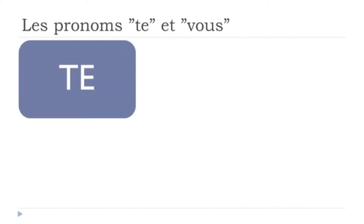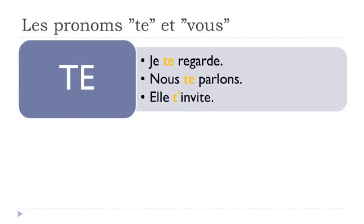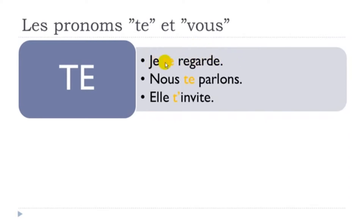Sur les pronoms te et vous. Let's see a few examples with te. The rule in French is that when you use pronouns, you always put them before the verb. So if you look at this sentence, the first one, you get je — the subject, I — then regarde, the verb meaning 'to look' or 'to watch', and then te. In English you put 'you' after the verb, like 'I look at you', but in French it always comes before the verb.